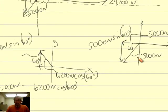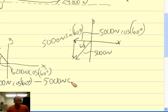And then I have the component in the x-axis from the 5,000 newton vector from the ATV. So that's also a minus, because it's pointing opposite the pickup, and that'd be 5,000 newtons times the cosine.